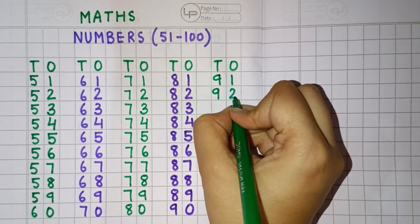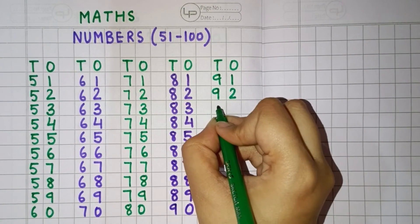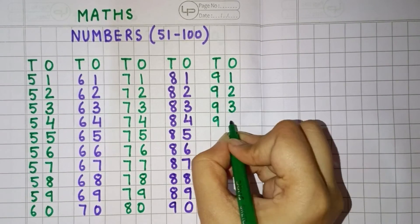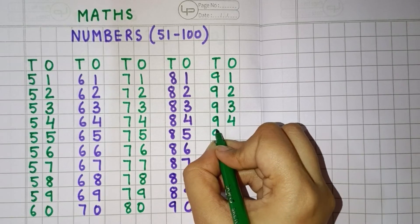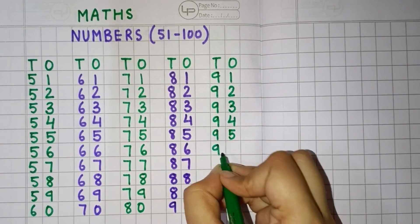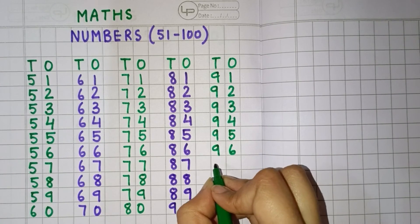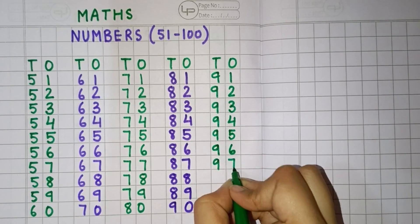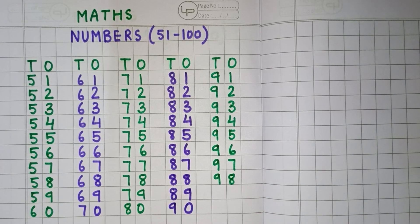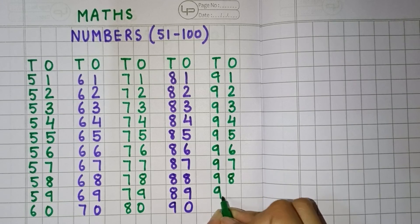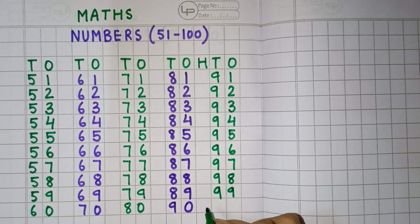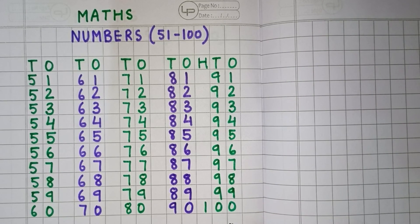91, 92, 93, 94, 95, 96, 97, 98, 99, and the last is 100.